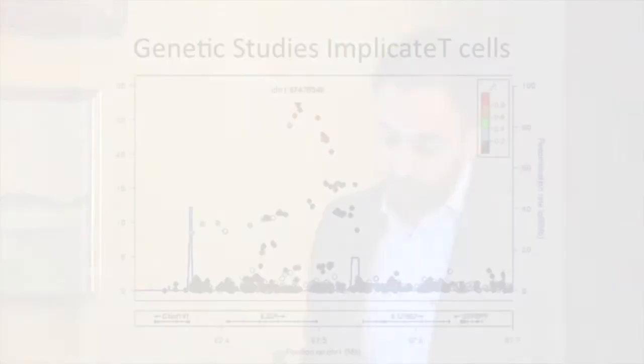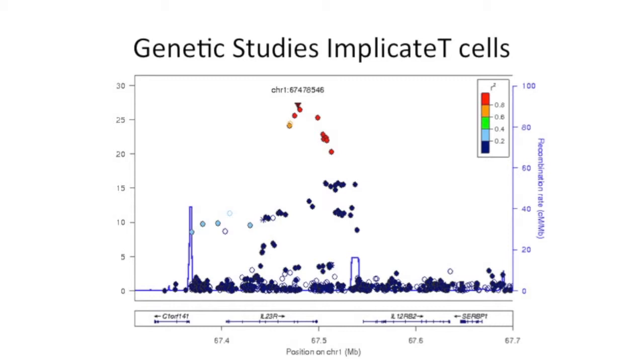Genetics has helped us a lot. This is called a Manhattan plot — it really is called a Manhattan plot because it resembles the Manhattan skyline. We can do genome-wide association studies to look for genetic markers that might predispose to disease. There's not one gene — there are multiple genes, and each one increases your risk of developing the disease slightly. But all of these genes seem to point towards a particular type of immune cell called a T cell.